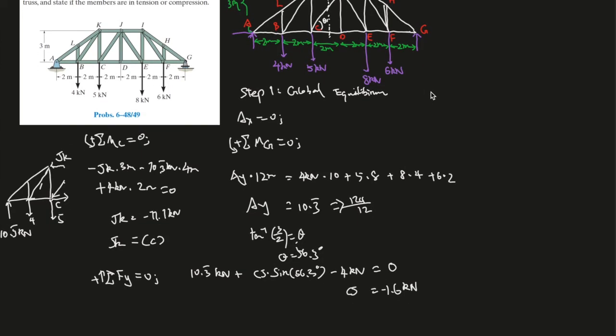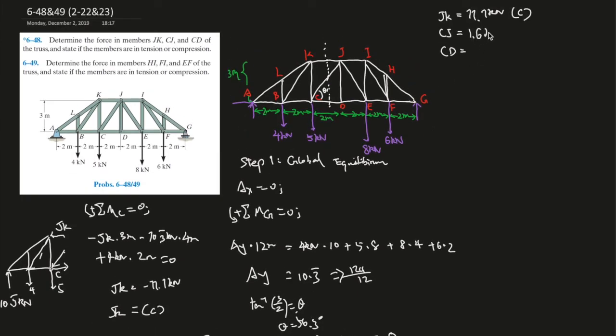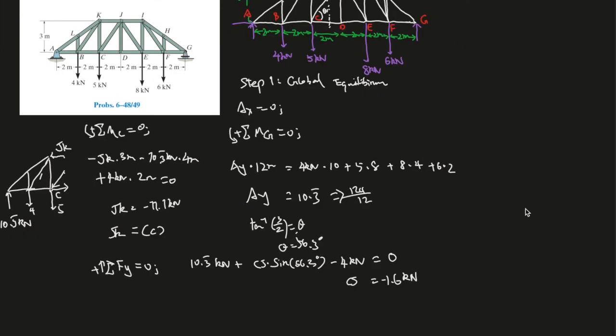So 10.3 kilonewtons, this is going positive, plus this force over here which is CJ. CJ times sine of, well, inverse tangent of 3 over 2 should give you the angle over here, we'll call it beta. Beta should give you, plug in your calculator, beta should give you 56.3 degrees. So sine of 56.3 minus 4kN.